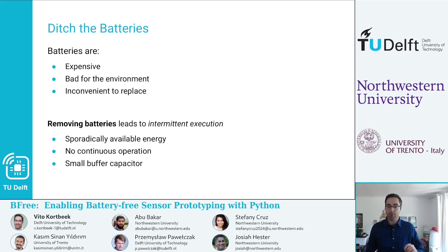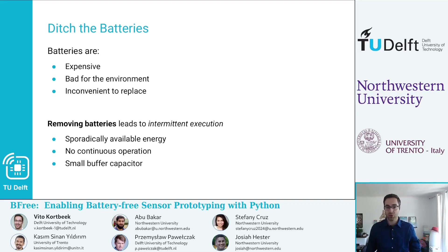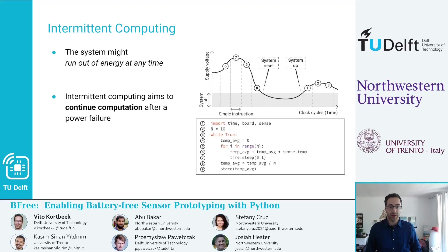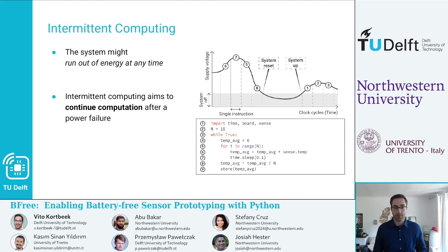So we use a small buffer capacitor, which is charged by the harvested energy. Whenever it reaches a certain threshold, that energy is used to execute. This is intermittent execution. And to make sure that everything runs smoothly and can continue where it left off when the system dies — that is intermittent computing.